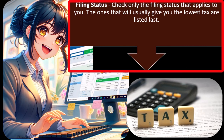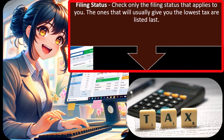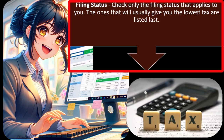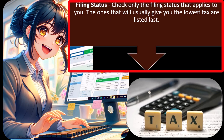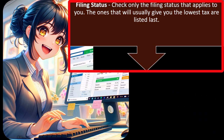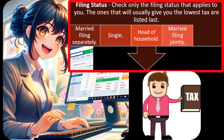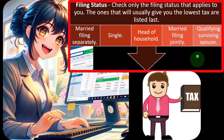For filing status, check only the one that applies to you — you cannot have more than one. Our objective is to pick the filing status we qualify for that provides the lowest taxes. The form lists them from least favorable to most favorable: married filing separately, single, head of household, married filing jointly, and qualifying surviving spouse. A qualifying surviving spouse is not a happy life situation, but it can be beneficial for taxes.